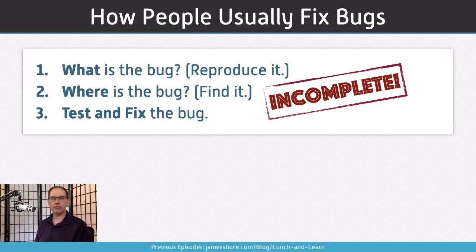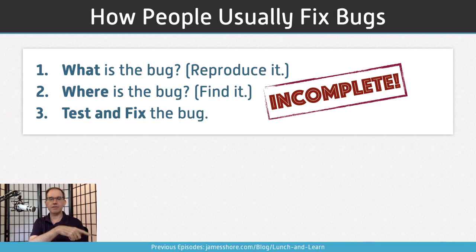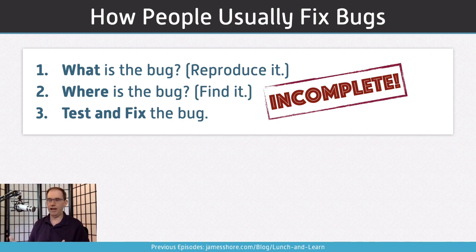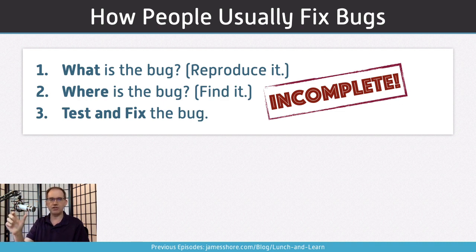That's step one: we've reproduced the bug, demonstrated it, and now we know how it happens and can double-check it when we're done. Next question: where is the bug? One of my favorite techniques for finding things in code is to skim all the files. Starting with a skim of all the files and making a quick guess of the responsibility for each filename — not necessarily even looking inside the code — really helps me orient myself. That's how I typically approach finding bugs when I'm not already familiar with the code.